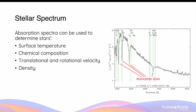Absorption spectra obtained from stars can be used to obtain information on the surface temperature, chemical composition, translational and rotational velocity of the star, as well as their density. The absorption lines look like small pits throughout the spectrum because these wavelengths are being absorbed by the electrons in the elements present in the stars.